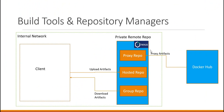Let us understand this diagram. In Nexus, we have three types of repositories: proxy repository, hosted repository, and group repository. The proxy repository is used to proxy artifacts — for example, docker images from remote registries like Docker Hub. When docker clients need images from external registries, they use the proxy repository for downloading. The hosted repository is used to save internally developed docker images within the organization. All clients upload images to the hosted repository so that other teams can download from it. The group repository combines both the proxy and hosted repositories, so clients can use the group repository for downloading images instead of accessing individual repositories. For downloading, we use the group repository; for uploading, we use the hosted repository.